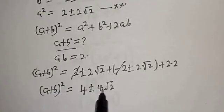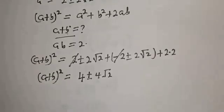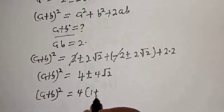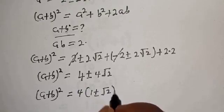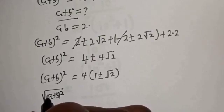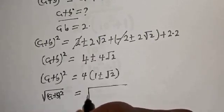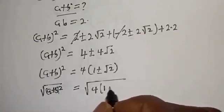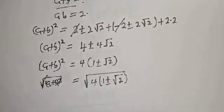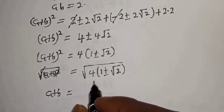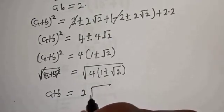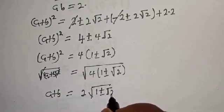Simplifying, (a+b) squared equals 4 times (1 plus or minus root 2). Taking the square root of both sides, a plus b equals 2 root of (1 plus or minus root 2).